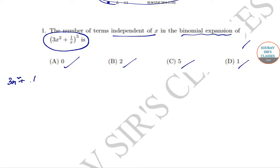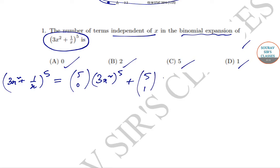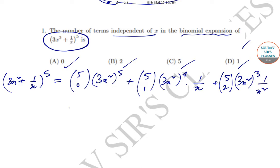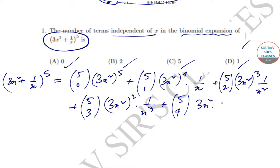If we expand (3x² + 1/x)^5 by binomial expansion, we get: 5C0·(3x²)^5 + 5C1·(3x²)^4·(1/x) + 5C2·(3x²)^3·(1/x)² + 5C4·(3x²)·(1/x)^4, and finally 5C5·(1/x)^5.